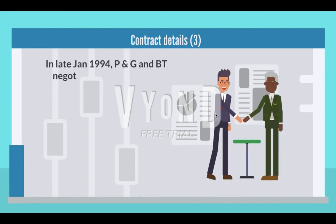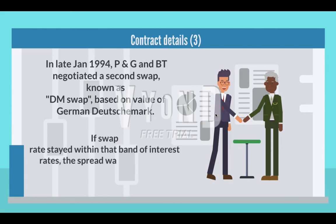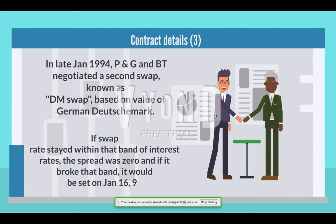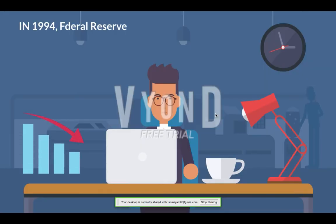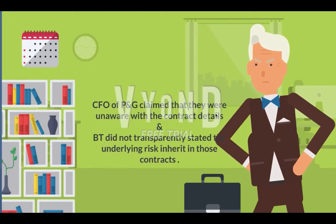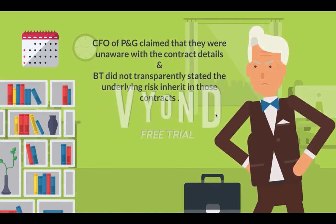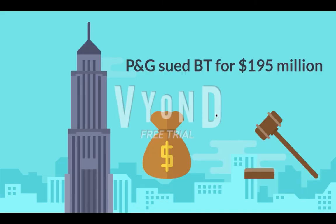In late January 1994, P&G and BT negotiated a second swap known as the DM swap, based on the value of the German Deutsche Mark. If the swap rate stayed within a certain band of interest rates, the spread was zero; if it broke that band, it would be set on January 16, 1995. In 1994, Federal Reserve Chairman Greenspan raised rates, and as a result P&G lost heavily. P&G's CFO claimed they were unaware of the contract details and that BT had not transparently stated the underlying risk inherent in those contracts.